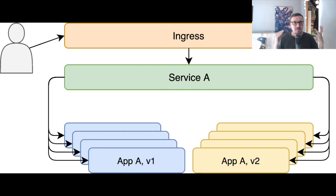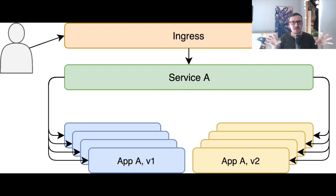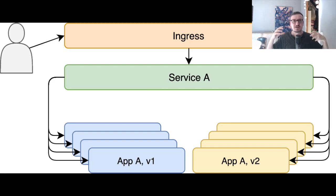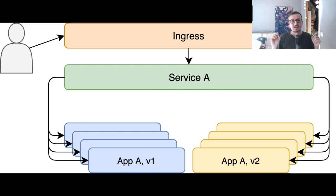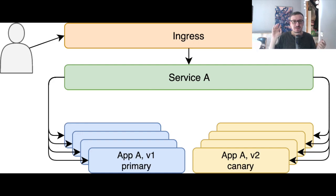Then we would deploy a new release in parallel with the old one — so APPA version 1 and version 2. In this diagram, you see that both of them have the same number of replicas, but in reality, the number of replicas would vary depending on some criteria. We are going to call the first release primary and the second release Canary.